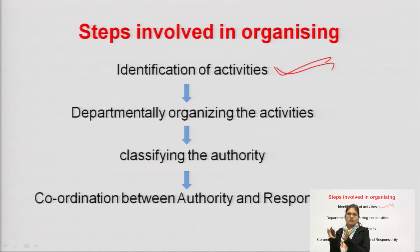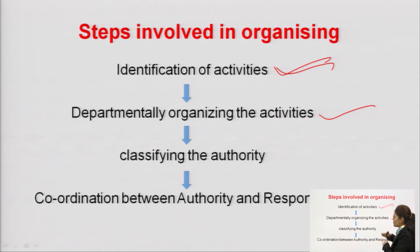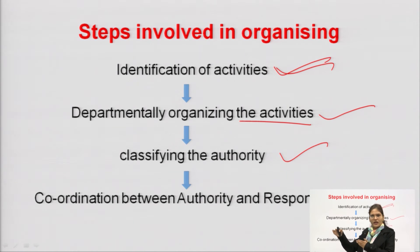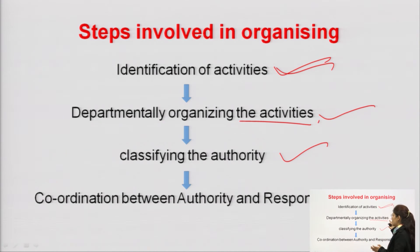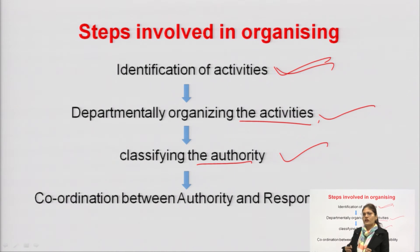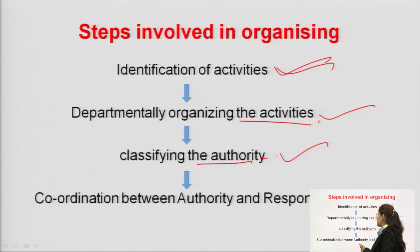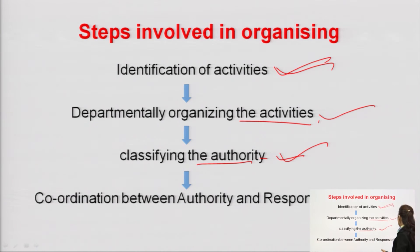After identification of activities, the manager groups the activities into different departments. Once he divides the work into departments, he classifies the authority — defining the department and allotting responsibility to people, then classifying what kind of authority each department needs. Once responsibility and authority are assigned, coordination between authority and responsibility is also done by the manager.